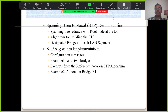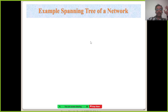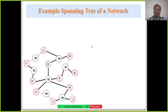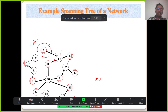I urge you to read reference 1, section 3.2.3, about the spanning tree protocol algorithm. I am following the example given there. Just to recall your memory: whatever is shown in red, those are all LAN segments, and these are all the bridges.